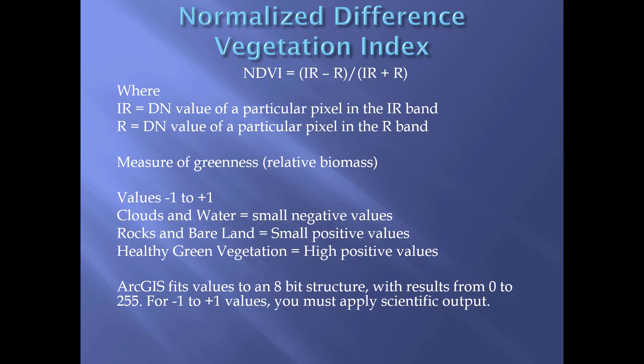Overall, NDVI is a measure of greenness and can be considered a good indicator of relative biomass. Values range from negative 1 to positive 1. Clouds and water will have small negative values, rocks and bare land will have small positive values, and healthy green vegetation will have higher positive values closer to positive 1. ArcGIS fits things into an 8-bit structure with 0 to 255 numbers, so to get the minus 1 to plus 1 values, you must apply scientific output.